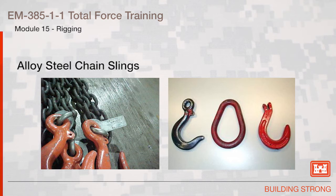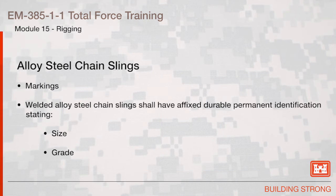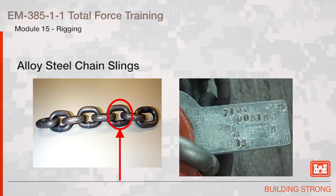This slide illustrates various end attachments used with alloy steel chain slings. Markings: welded alloy steel chain slings shall have a fixed, durable, permanent identification stating size, grade, rated capacity, and sling manufacturer. The picture on the left indicates an alloy steel chain sling with markings indicating its grade. The picture on the right illustrates a tag with the other additional required information.